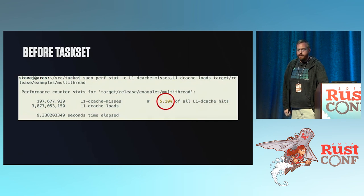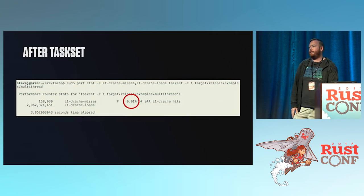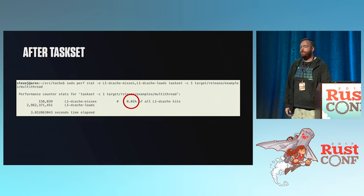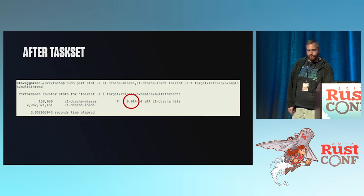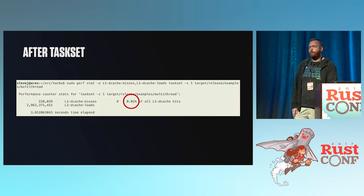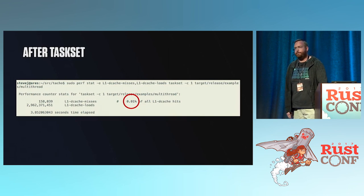Going back to Perf, I had that 5% miss rate in the multi-threaded benchmark. I decided to use taskset to run it on one CPU, and the miss rate dropped to 0.01% — pretty fantastic. The total run time dropped from 9 seconds to 3.8 seconds. IPC increased about 10%, which tells me there's still a lot more work we could do to improve performance.